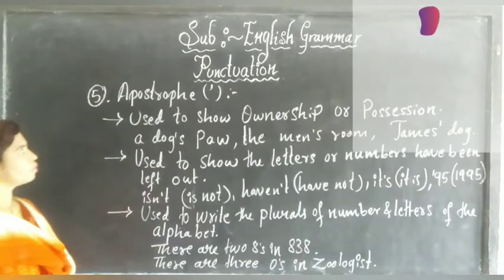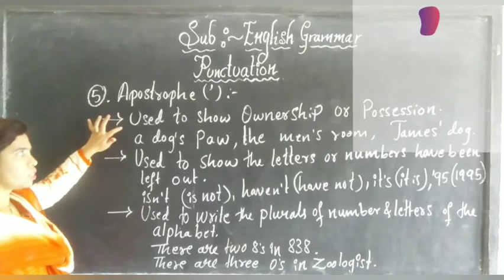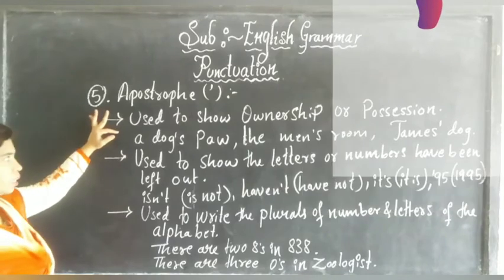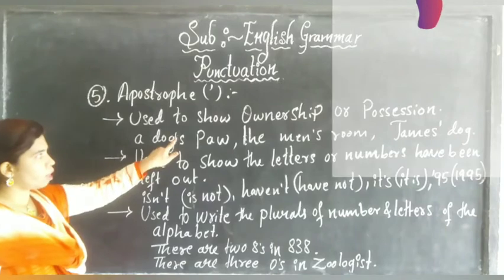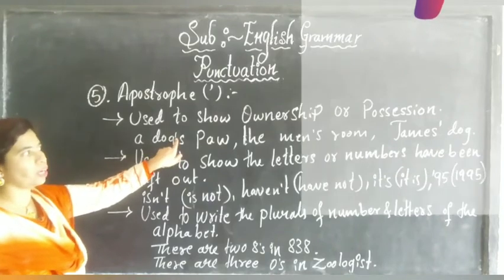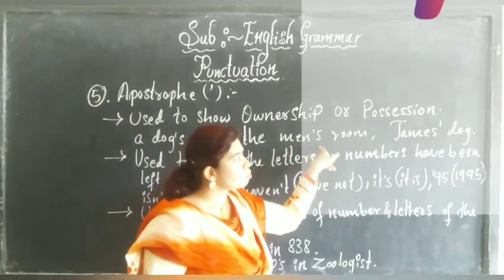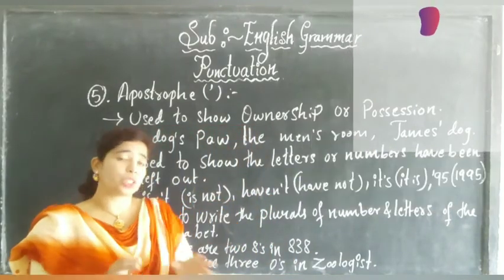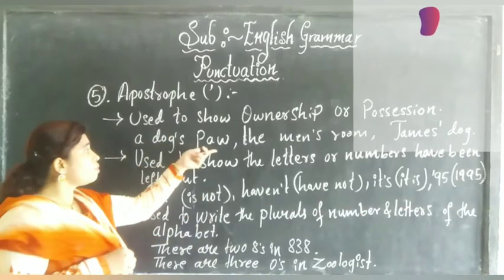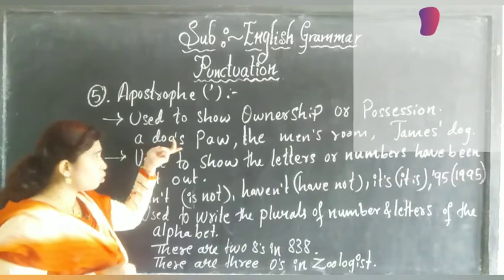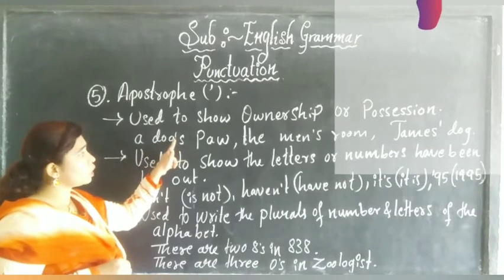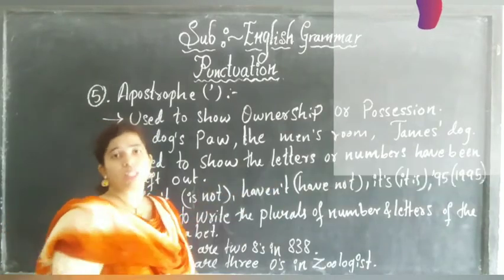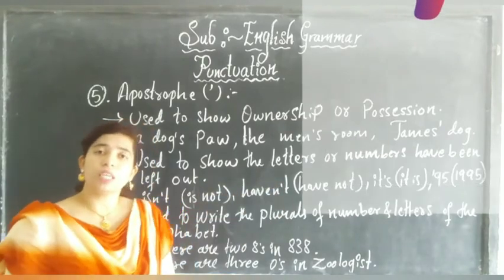Now going to the fifth punctuation: apostrophe. Apostrophe is used to show ownership or possession. For example, 'a dog's paw' — apostrophe shows the paw belongs to the dog. 'The man's rule,' 'James' dog.' When we are showing ownership — that something belongs to someone or something — we use the apostrophe.